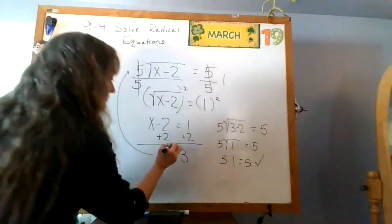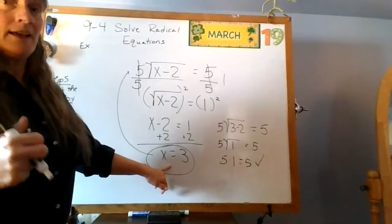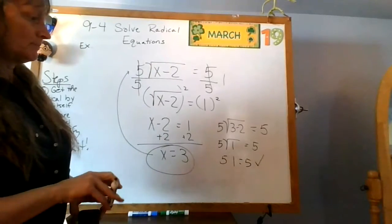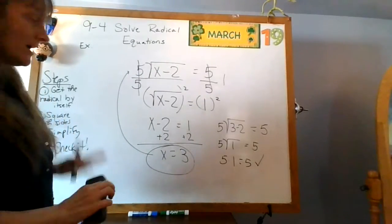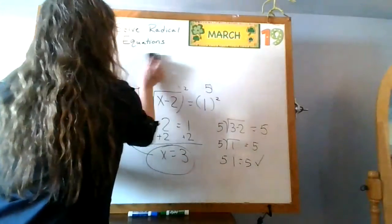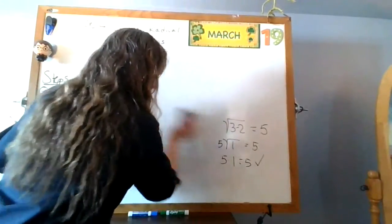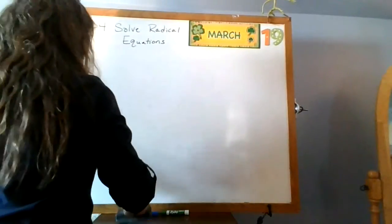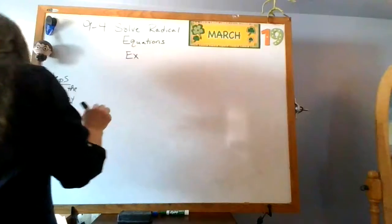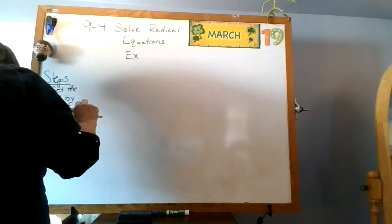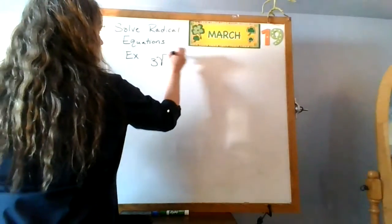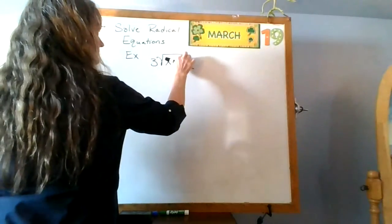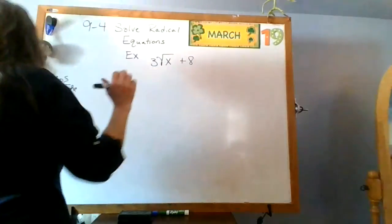Circle x equals three, and again that's the number you'll write into the answer form. Make sure you have this written down as an example. Alright, we're going to do a couple more so that you see some that maybe don't work out the way we want them to. So: three times the square root of x, plus eight on the outside, equals two.